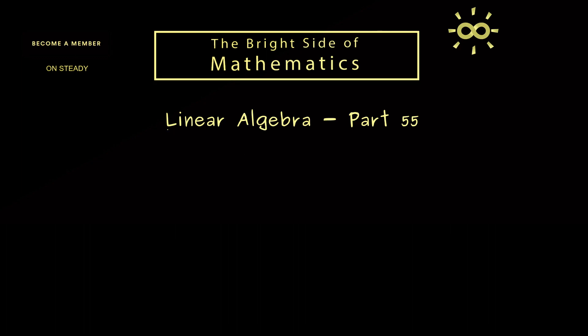Hello and welcome back to Linear Algebra, the video series where we talk a lot about eigenvectors and eigenvalues. In today's part 55 we will explain the term algebraic multiplicity. In some sense it will tell us how often an eigenvalue occurs for a given matrix.